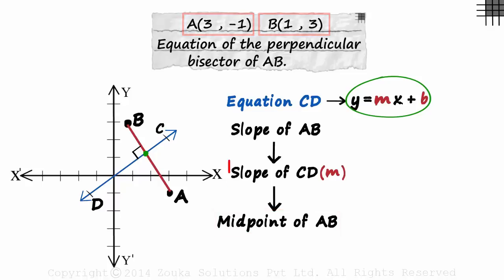And we can easily find the midpoint of AB as we have the coordinates of its endpoints. So after we get the slope of CD, we find the midpoint of AB which will also give us B. Once we have M and B, we can easily find the equation of CD.